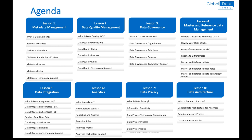We will start with metadata management, and then continue with data quality, data governance, master and reference data management, data integration, analytics, data privacy and data architecture. It is important to understand that data management capabilities are mutually related to one another. Therefore, we put some logical order in which capabilities will be covered, so we can have a nice story flow throughout the course.